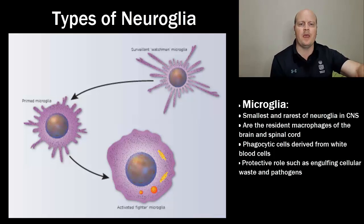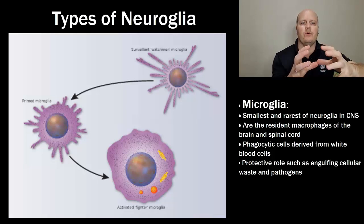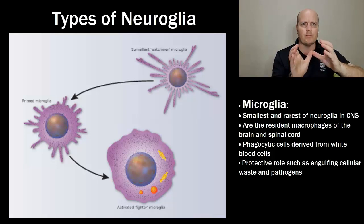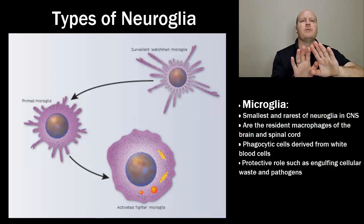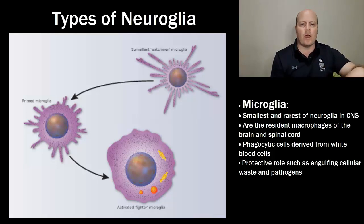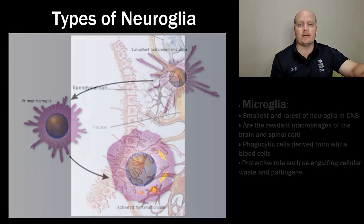Microglia are the smallest neuroglia in the central nervous system. They are the resident macrophages of the brain and spinal cord — phagocytic cells that engulf material: the cell membrane opens up, a bit of material outside the cell is taken inside, and then broken down and destroyed. These cells are derived from white blood cells and have a protective role, engulfing cellular waste and pathogens.